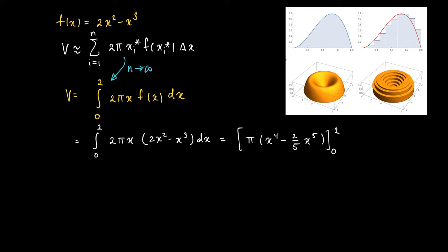So we obtain π times, well, substitute 2, then we get 16 minus 2 over 5 times 32. And if we plug in 0, substitute 0, we're left with nothing. So we get 16 over 5 π.